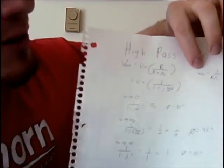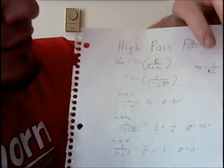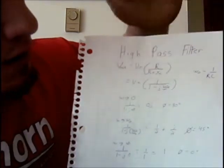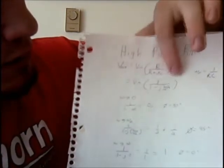And then we also stated that W naught equals 1 over RC. And then this simplifies down this equation.